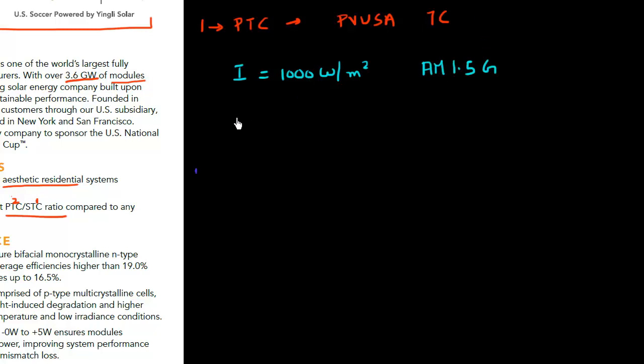And then you assume that the temperature of the ambient is essentially equal to 20 degrees centigrade. You assume that there's a certain wind blowing. And this wind is blowing at a rate of one meter per second, which is equivalent to like 2.25 mile per hour. And this is what corresponds to PTC.